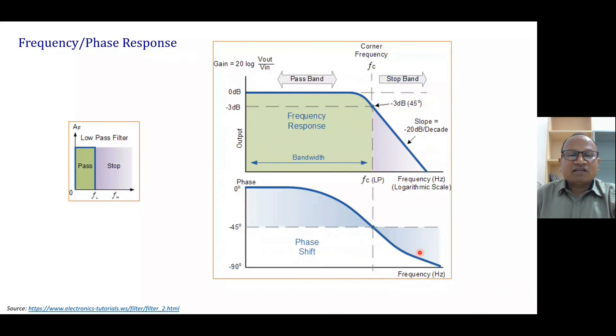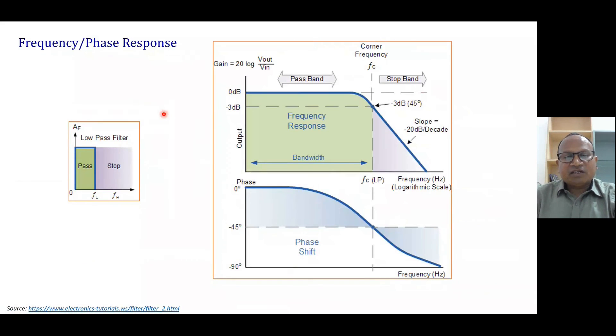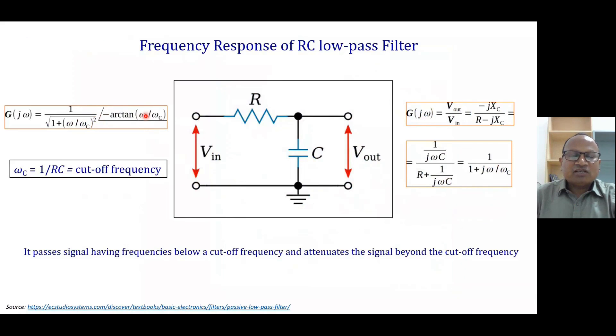And the next one is the phase response. So you see here, if we begin from 0 degree, it is minus 45 and minus 90. Minus 90 for very high frequency, exactly at cutoff frequency it is minus 45 degree. Why? You see here, when we put omega equals omega C, minus tan inverse 1 is minus 45 degree. And when we take omega equals 0, it is 0 degree.